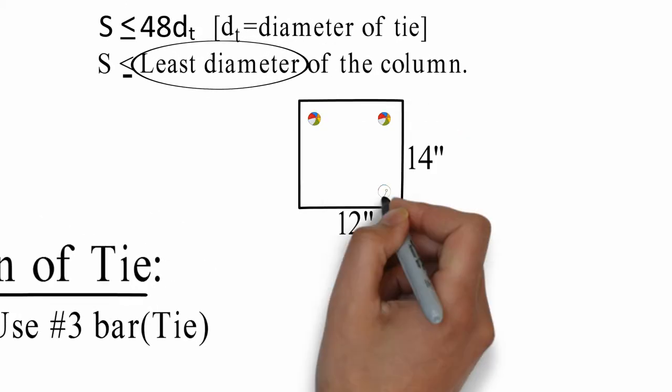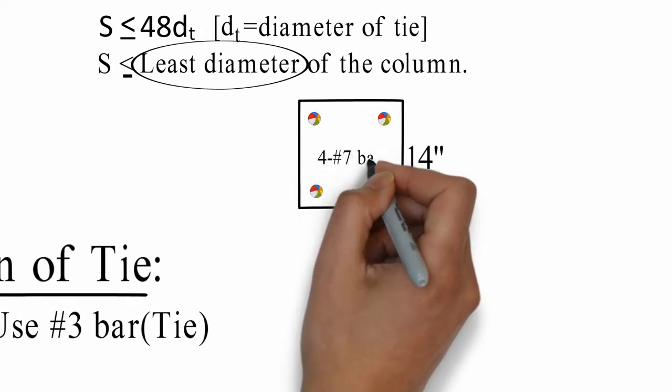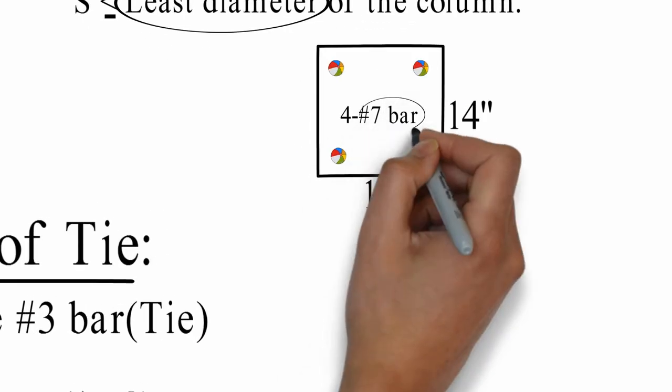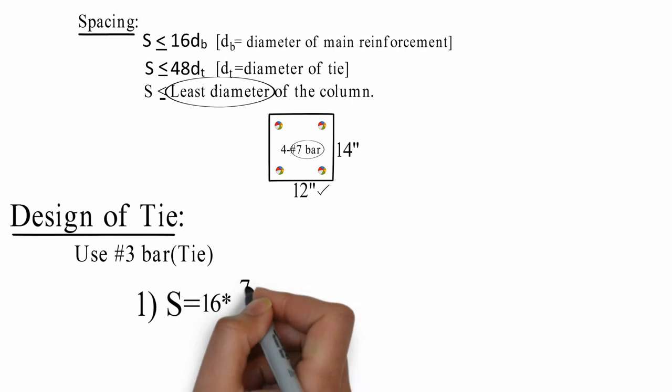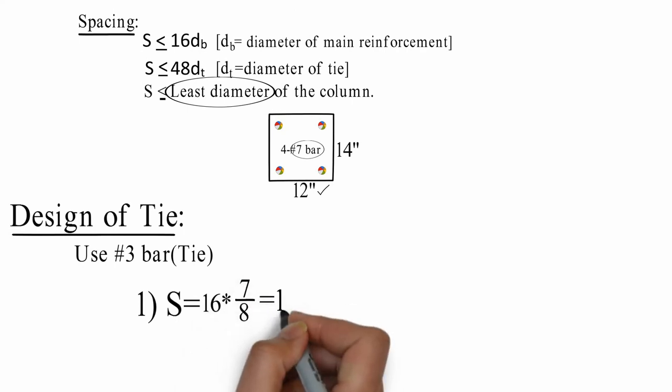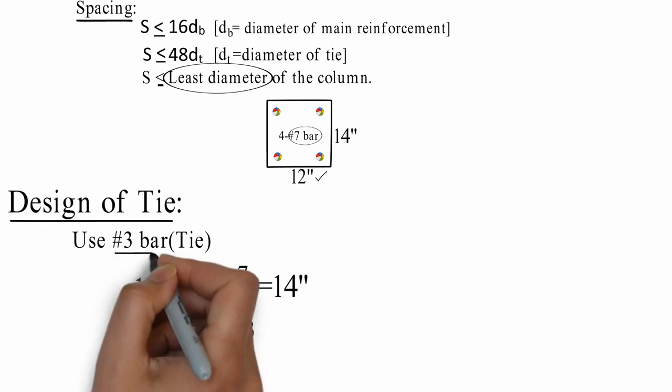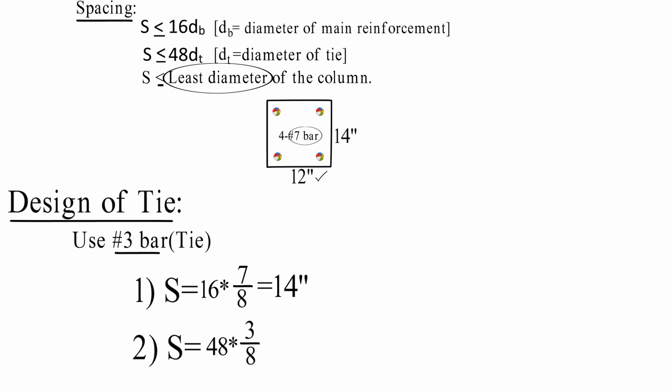We consider 4 number 7 bars. S equals 16 times 7 divided by 8 equals 14 inch. S equals 48 times 3 divided by 8 equals 18 inch.